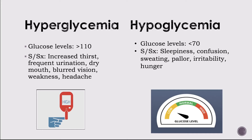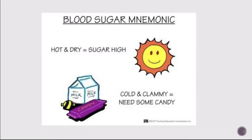Hypoglycemia is low blood sugar — glucose below 70. Signs and symptoms include sleepiness, confusion, sweating, pallor, irritability, and hunger. Both hyperglycemia and hypoglycemia can be fatal if untreated. A helpful mnemonic: hot and dry, sugar's high; cold and clammy, needs some candy. Hot, flushed, dry skin means sugar is high; cold, sweaty, clammy means sugar is low.